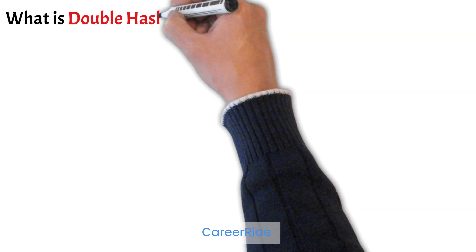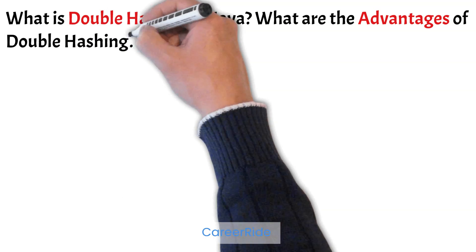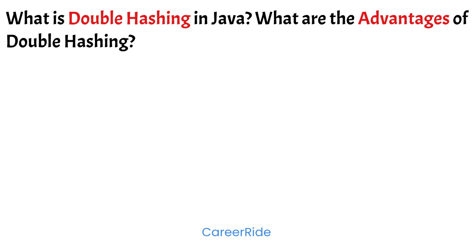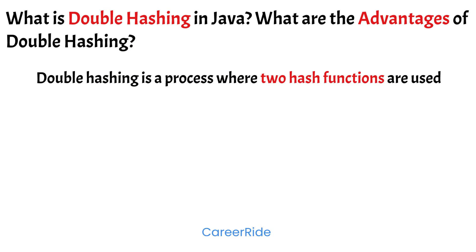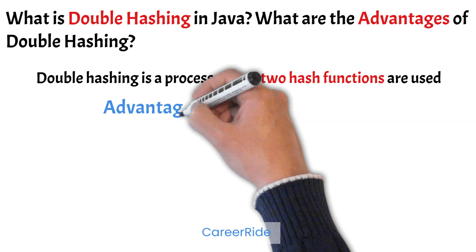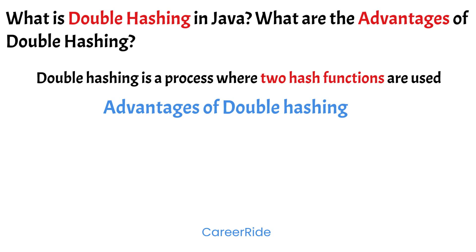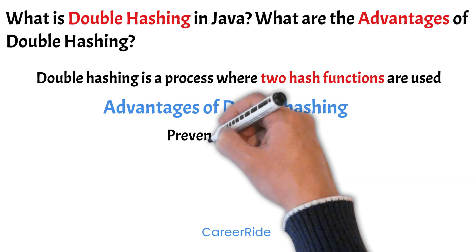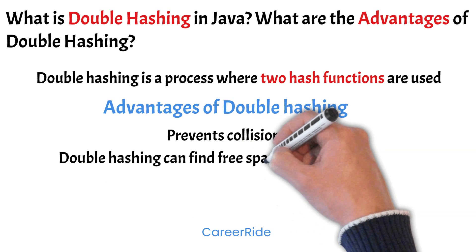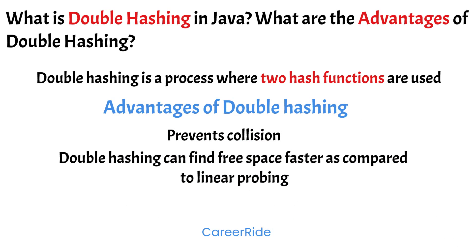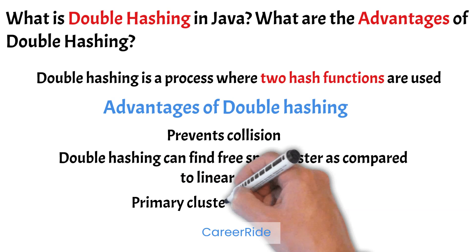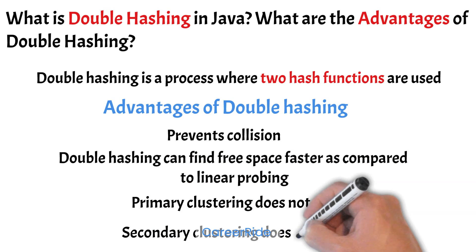What is double hashing in Java? What are the advantages of double hashing? Double hashing is a process where two hash functions are used. It is a technique used to prevent collisions — in case there is a collision after the first hash function, the second hash function is used. The advantages of double hashing: it prevents collisions; it can find free space faster as compared to linear probing; and primary and secondary clustering do not occur.